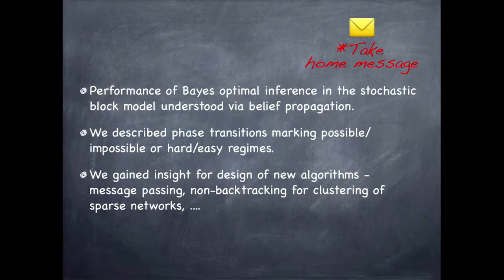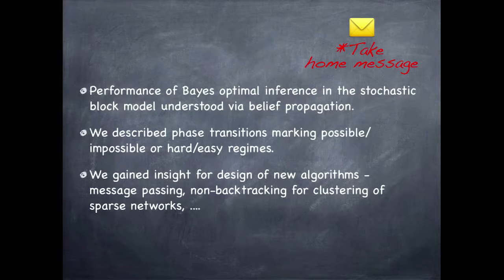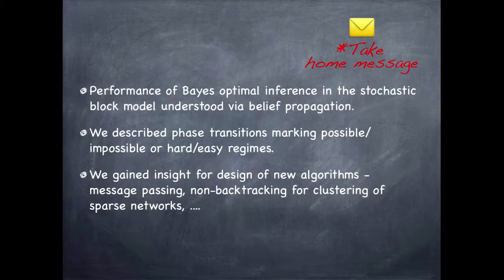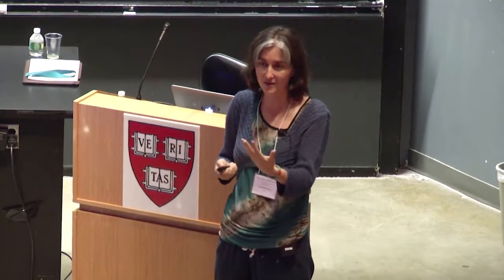To summarize: I told you about Bayes-optimal inference in the stochastic block model, about belief propagation being a really nice analysis tool, and about analyzing what is possible algorithmically and statistically in a very simple model. The linearization of belief propagation led us to the non-backtracking matrix — a really nice spectral algorithm that can be used for other problems where we don't have this nice motivation, but which works well empirically as well. Thank you.